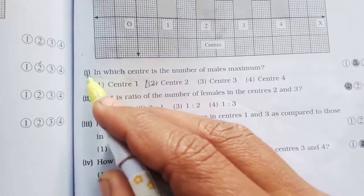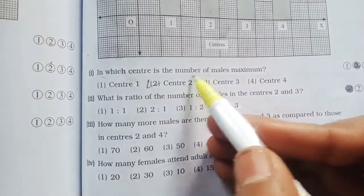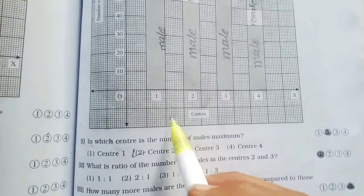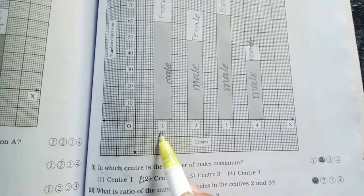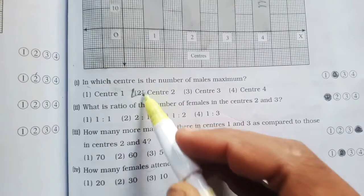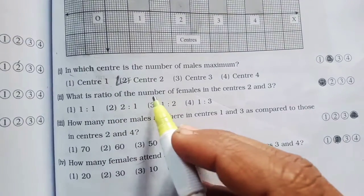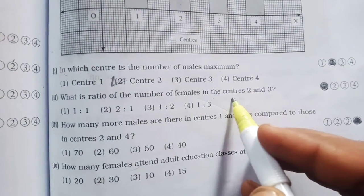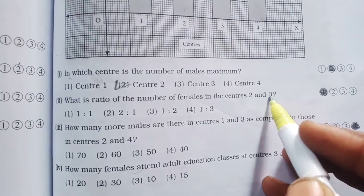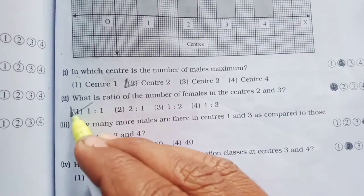Question number one. In which center is the number of male maximum? Male संख्या maximum किती center आहे? Two. Center two. Second, what is the ratio of the number of female in the center two and three? Two and three च्या ratio किती one by one. One by one.